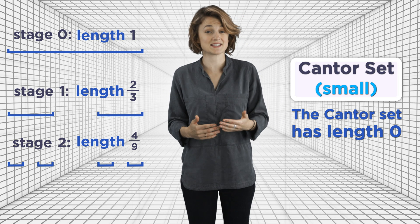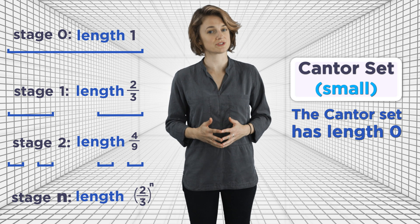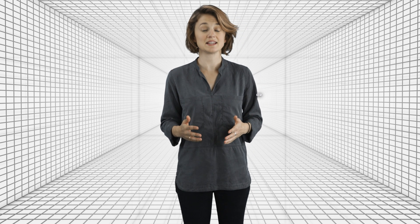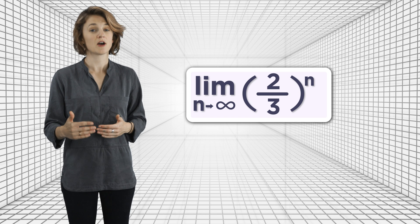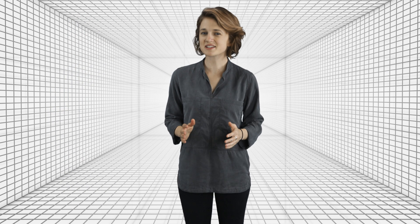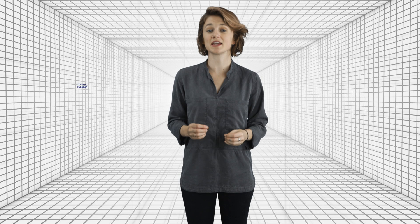Continuing this, at stage n, the set has length (2/3)^n. The Cantor set is produced after infinitely many stages. So the length of the Cantor set is the limit, as n goes to infinity, of (2/3)^n, which is zero. Basically, the Cantor set is weird. It's uncountably big, but has zero length. It actually has a ton of other weird properties, several other episodes worth. But for now, let's talk about the Cantor function, also known as the devil's staircase.